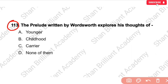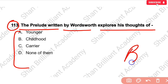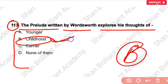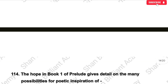MCQ No. 113: The Prelude written by Wordsworth explored the thoughts of which time period? The answer is childhood — Wordsworth explored the thoughts and memories of his childhood in the Prelude.